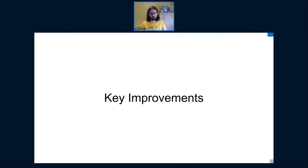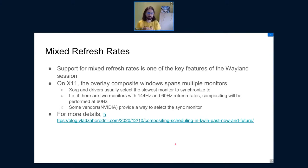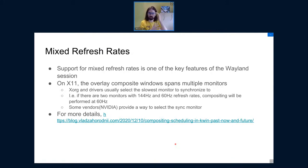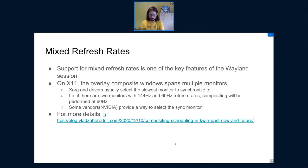I'll highlight a few improvements made since last Akademy. One of the main things that landed was mixed refresh rates — different outputs can have different refresh rates, so you can have a higher refresh rate on one screen. Or if you have a game that's heavy on the GPU, it can lower the refresh rate on that output compared to the second screen. On X11, this wasn't possible by design, and that's one of the features that Wayland allows.